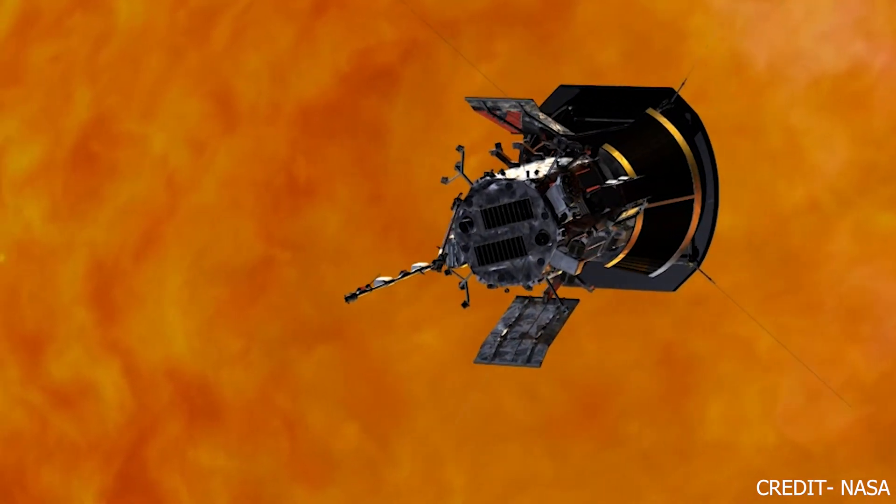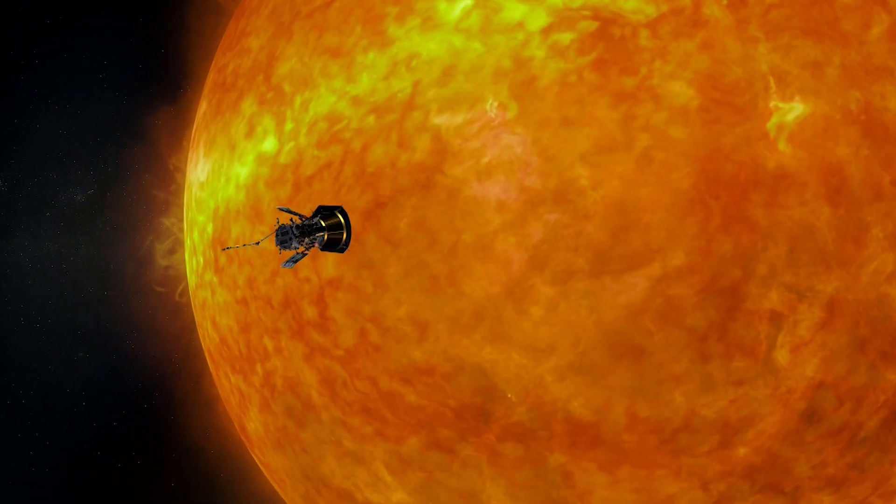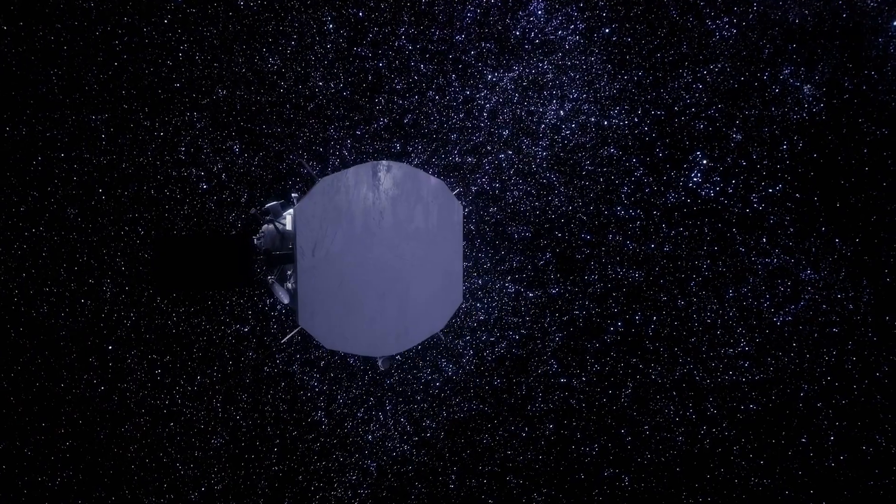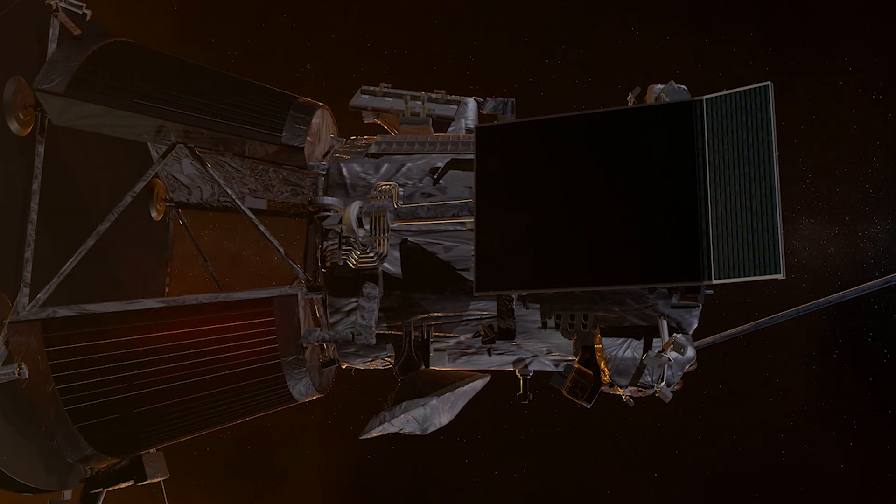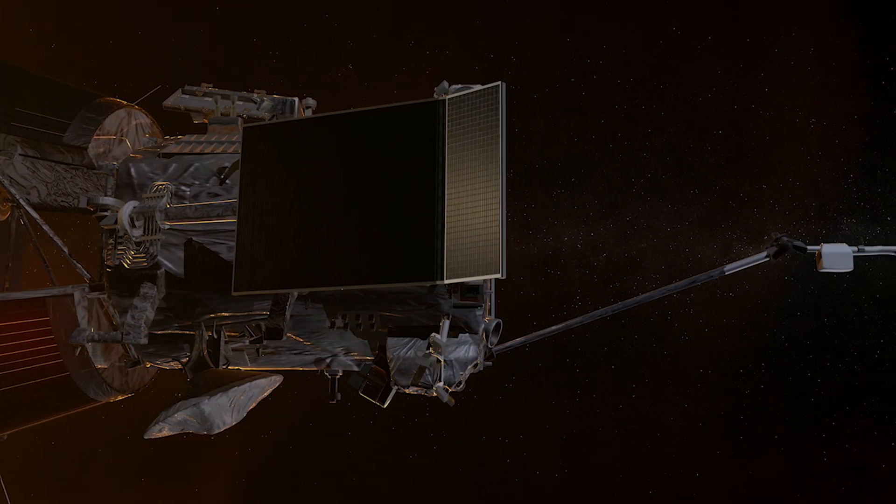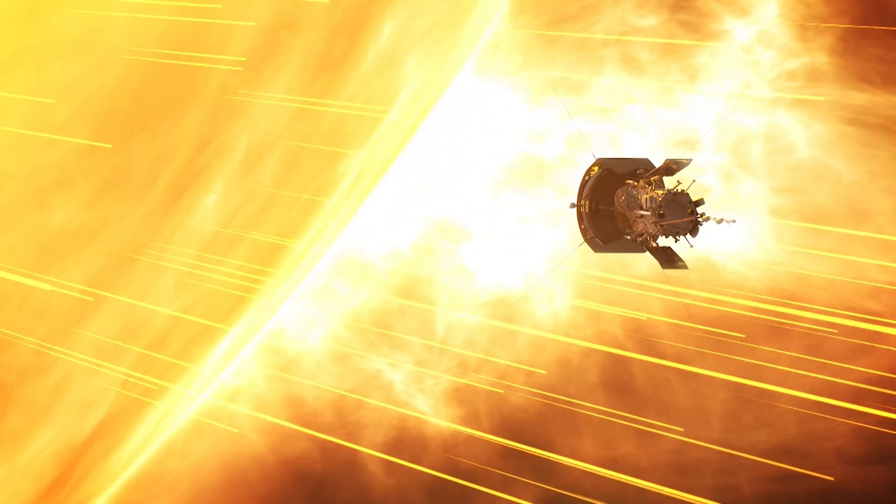The Parker Solar Probe is not only engaged in a groundbreaking study of the sun, but is also powered by the celestial body itself. The spacecraft is equipped with solar panels, which conserve fuel by harnessing the energy radiating from the sun. As the probe ventures closer to the sun, the risk of damage to these panels increases.